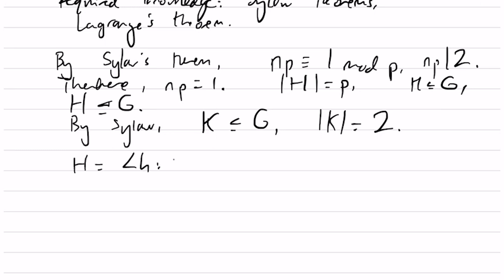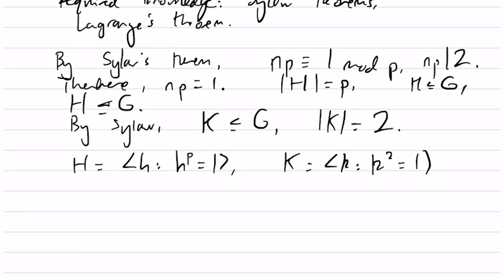So H is the subgroup generated by some h such that h to the p is the identity, and K is some subgroup such that k squared is the identity.